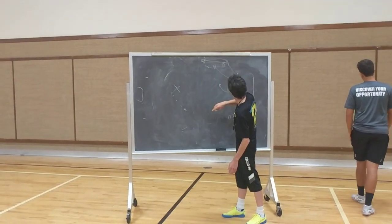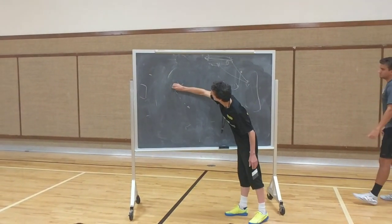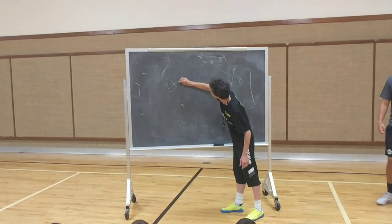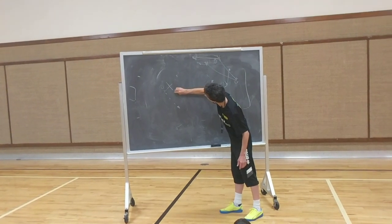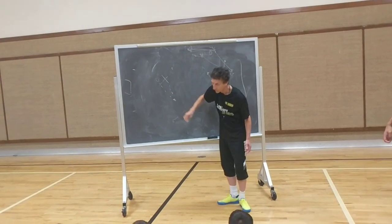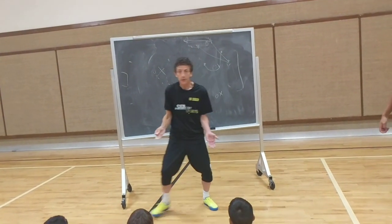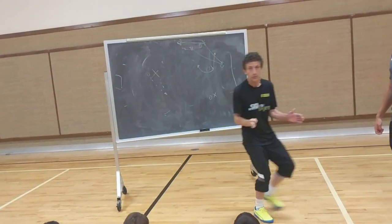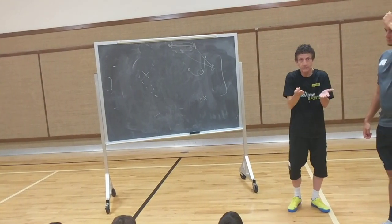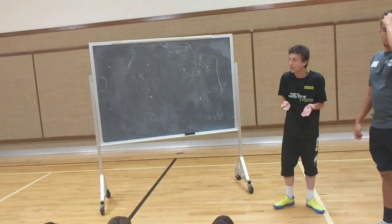You guys understand? It's easy for the pivot. One, two, three — between. One, two, three — between, between. One, two, three, and receive the ball directly.